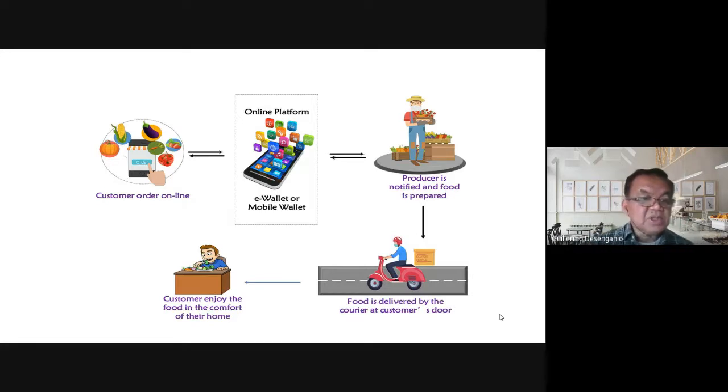Here's another example with customer ordering online, and payment is also online using payment mechanisms like e-wallets. Now the popular one is GCash. The producer is notified and food is prepared, with panda delivery or similar services. Food is delivered by the courier at the customer's door so that the customer can enjoy the food in the comfort of their home.